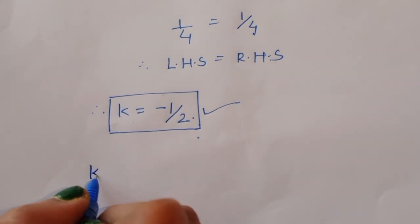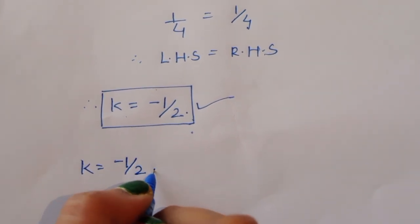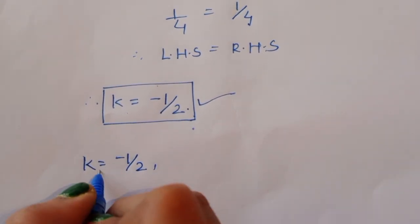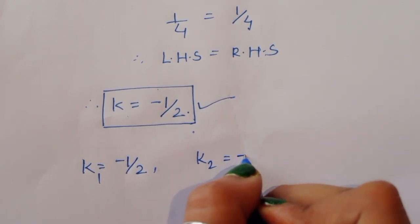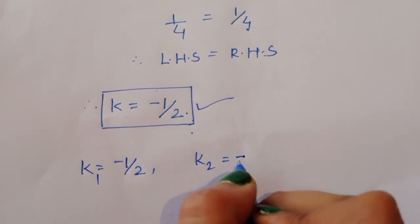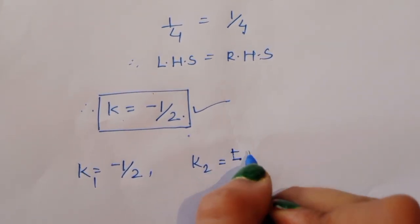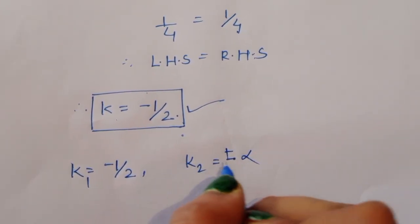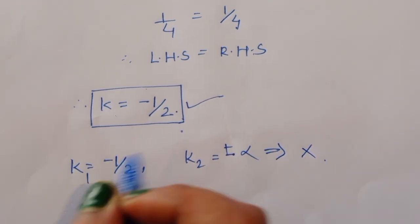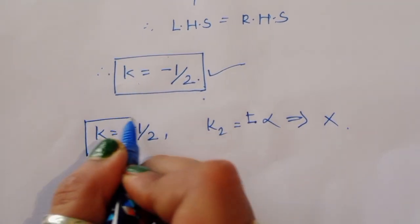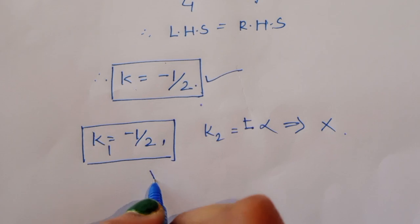So we got two solutions: k₁ is equal to minus 1 by 2, and k₂ is equal to plus or minus infinite. But since infinite is not a valid finite solution, we are ignoring that. So we have only one solution: k₁ is equal to minus 1 by 2. Thank you.